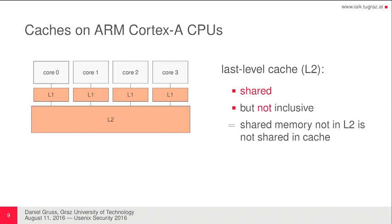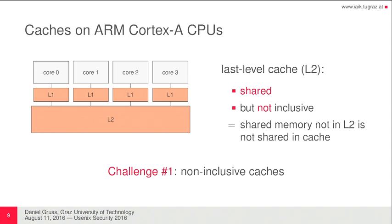On ARM, this is a bit different. There you have two layers of cache — usually the level one cache, which is again private, and the level two cache, which is shared. But on ARM CPUs you have a wide range of possible implementations, and usually the level two cache will not be inclusive. Therefore you cannot throw something out of another process's level one cache just by doing something in the level two cache. So the first challenge we identified is performing attacks on these non-inclusive caches.